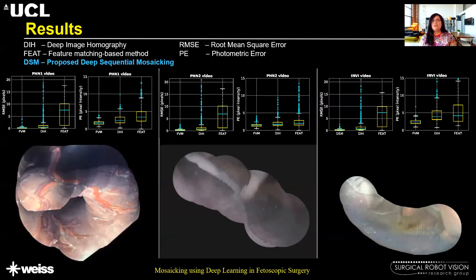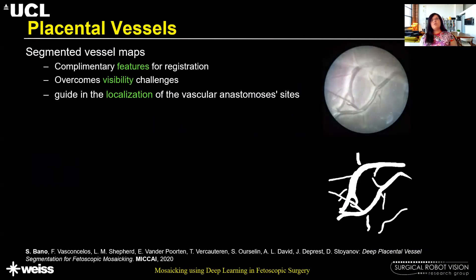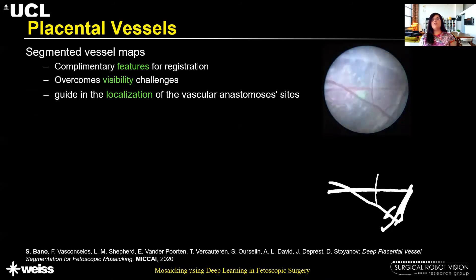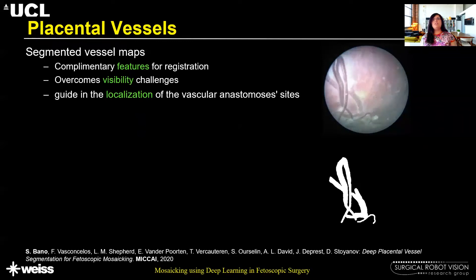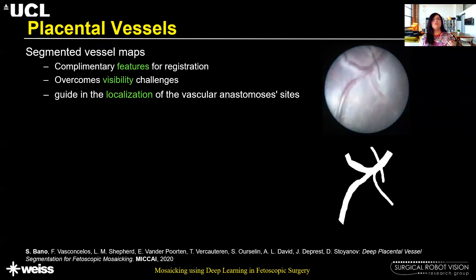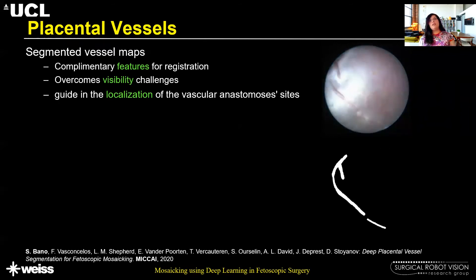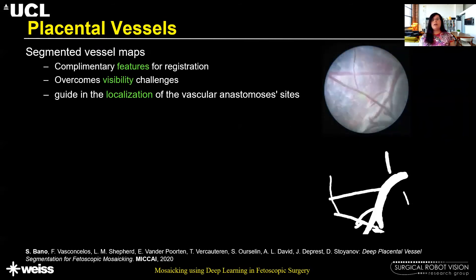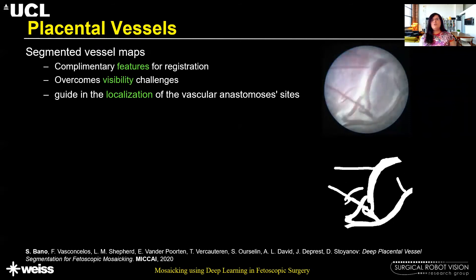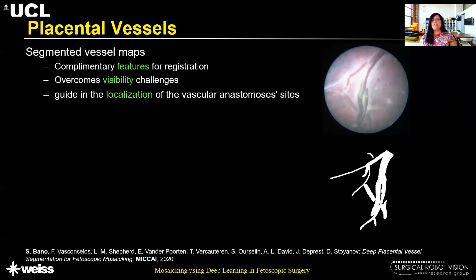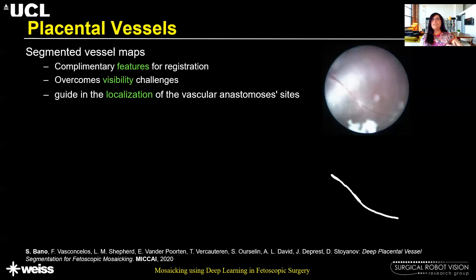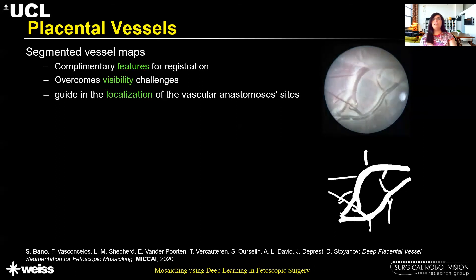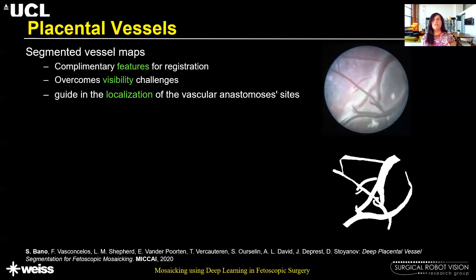We then looked into vessel segmentation, as placental vessels are unique landmarks. Segmenting these vessels and obtaining vessel maps can provide complementary features for registration. Many visibility challenges — such as lighting conditions and moving occlusions — are filtered out when working with a segmented vessel map, which significantly improves registration compared to image-based methods. This is also very useful for localization of vascular anastomosis sites, which is exactly what surgeons need to identify during a TTTS procedure.